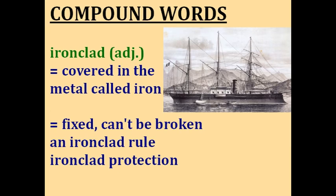Ironclad. Ironclad literally means to be covered in the metal called iron, like a battleship in the picture — the iron provides protection. But the word ironclad is often used metaphorically. For example, an ironclad rule or ironclad protection. It means something that's fixed and can't be broken. So an ironclad rule is one that you can't break, and ironclad protection is protection that can't be penetrated.